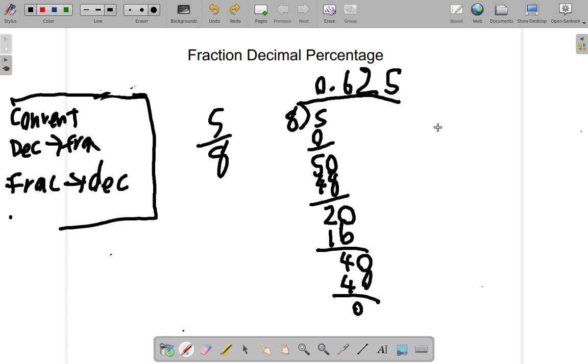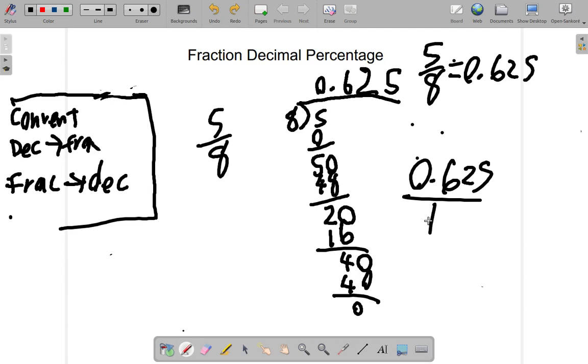So 5/8 is equal to 0.625 as a decimal. Now 0.625 is what percentage? First of all, 0.625 means the same as 0.625 out of 1.